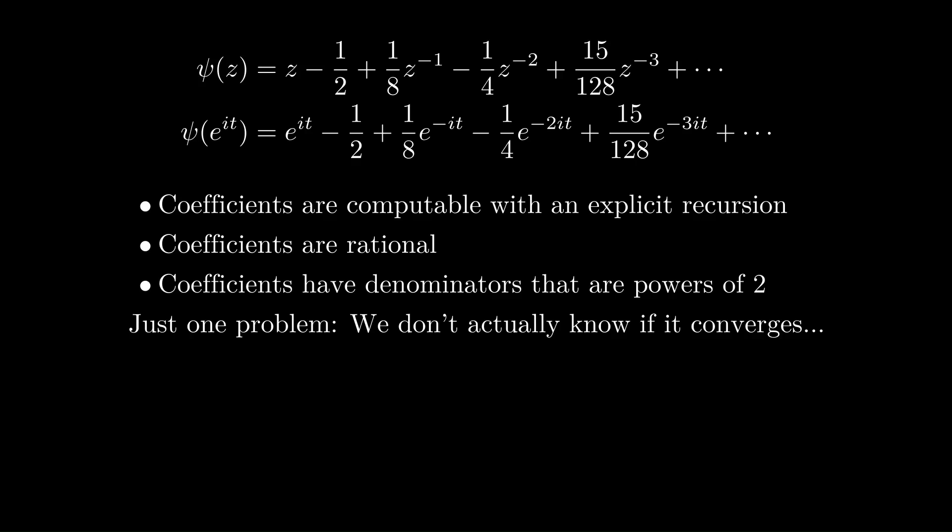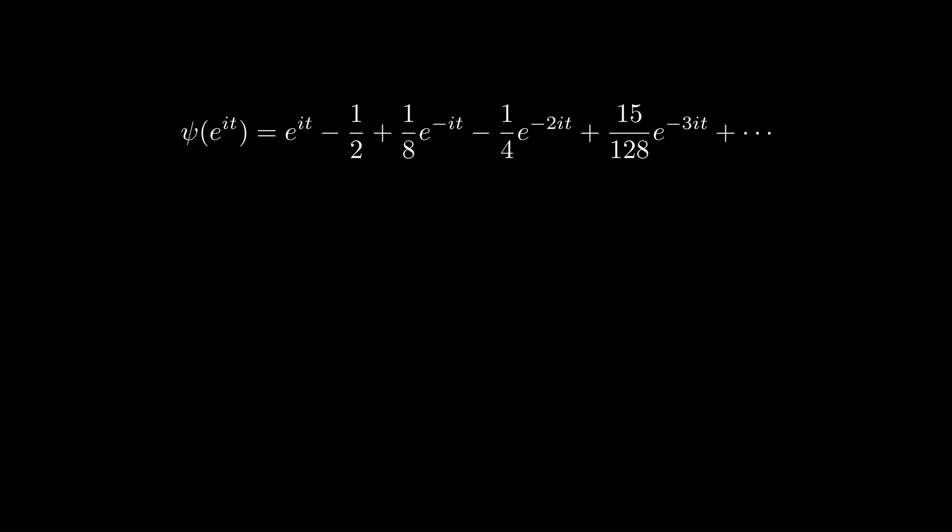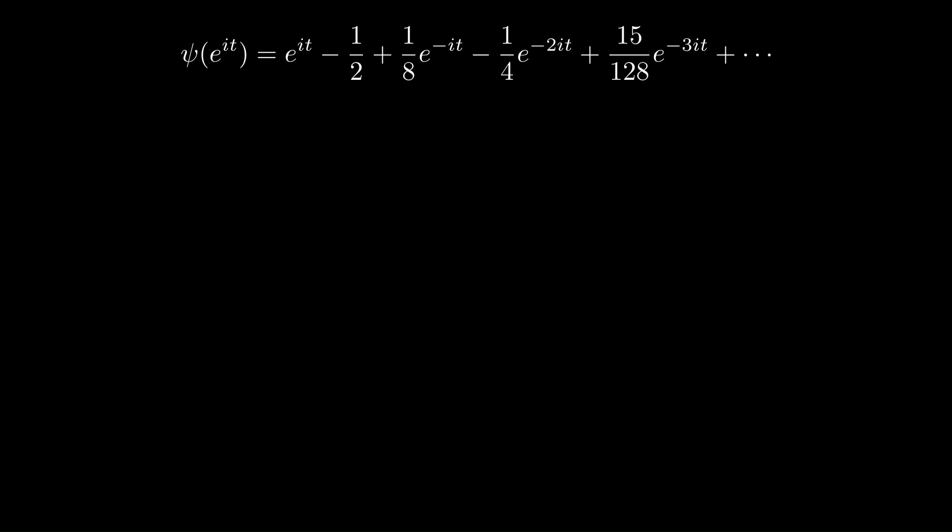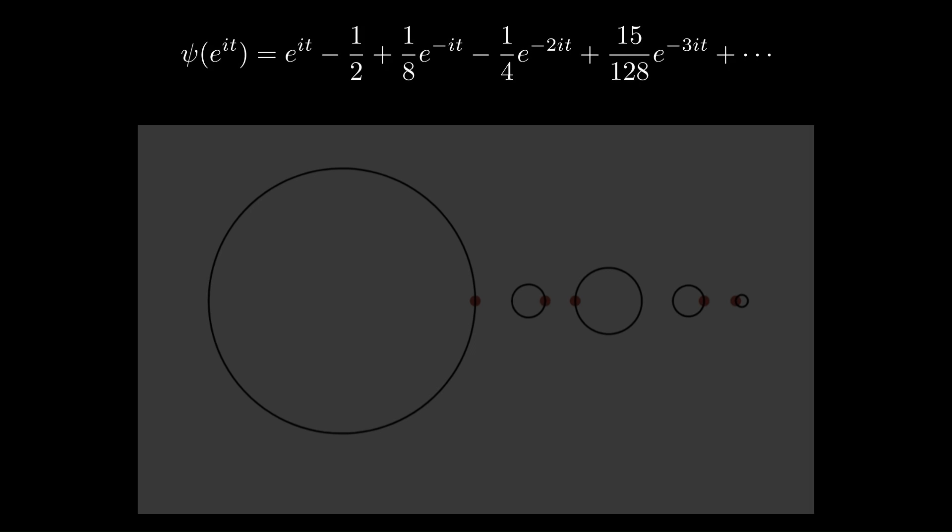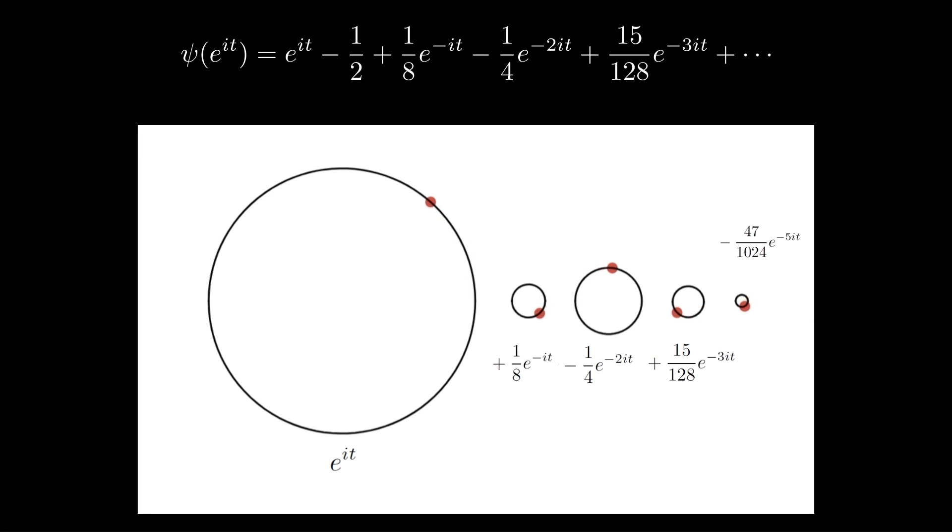But for the moment, let's just assume that it does converge, and let's look at the partial sums of this. So if we take the first few terms, so we'll look at e to the it up to e to the minus 5it, we can represent all those as t varies with circles of varying radii. So the coefficient up to the sine tells us the radius of the circle, and then the exponent tells us how fast the point goes around the circle. And the e to the it goes counterclockwise, and all the other terms go clockwise. I didn't include the minus 1 half here because that's just a constant, so it isn't very interesting.